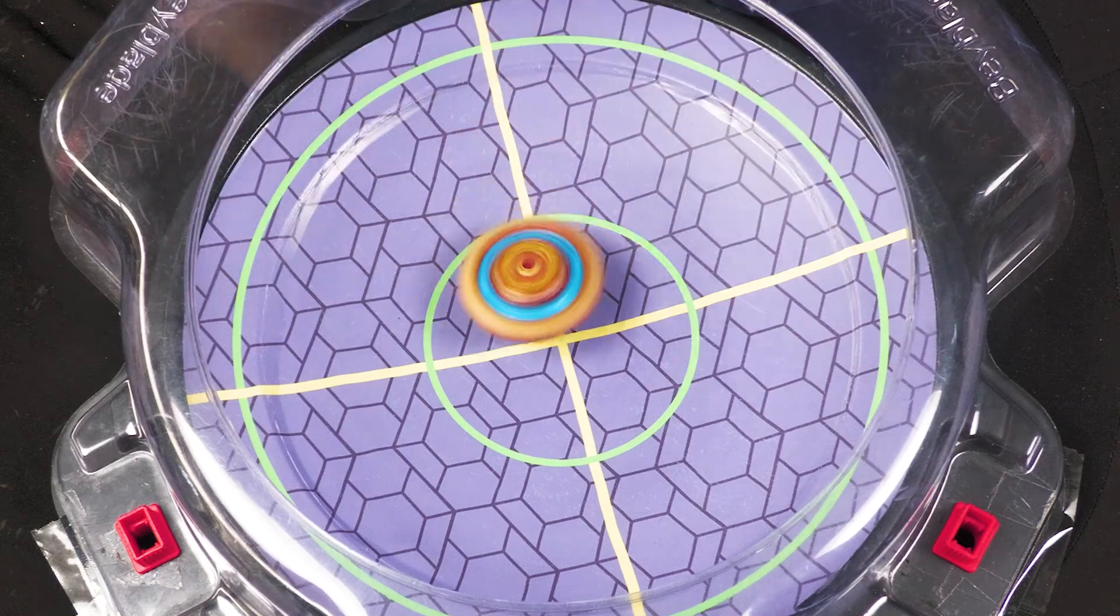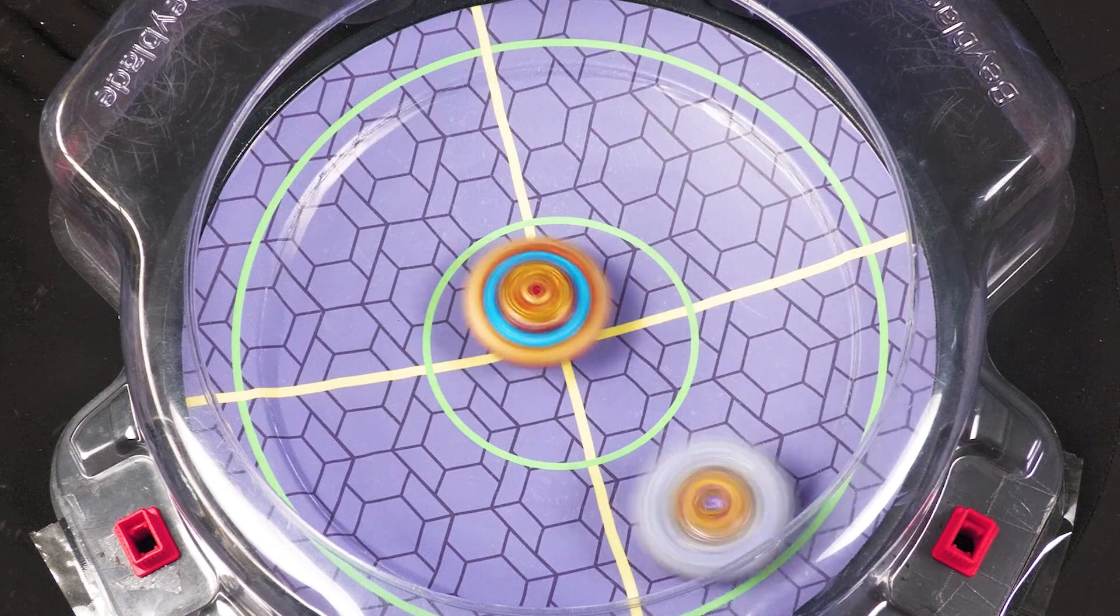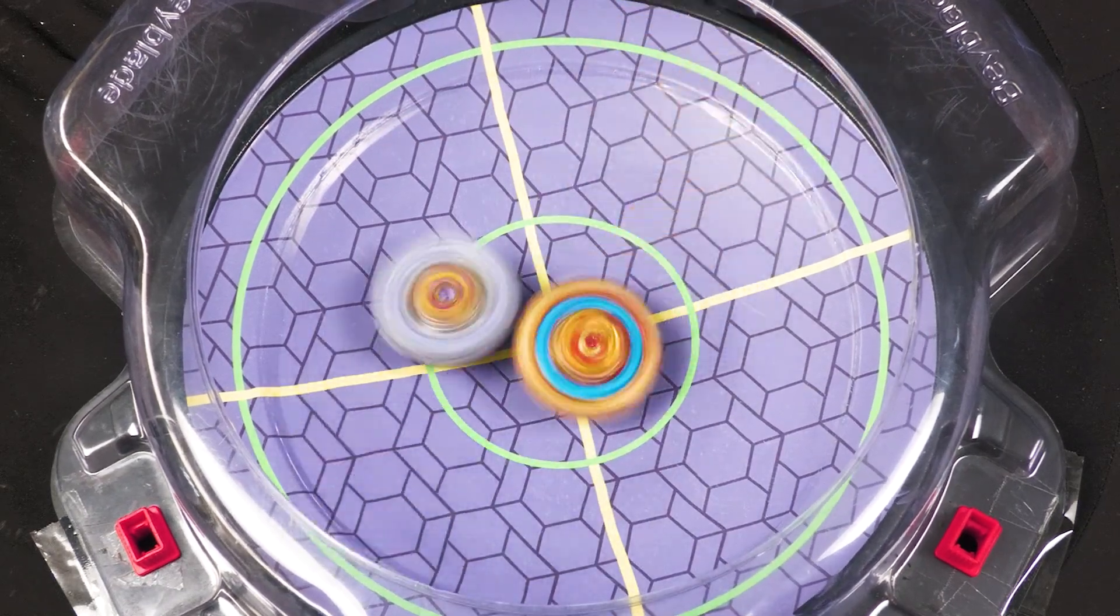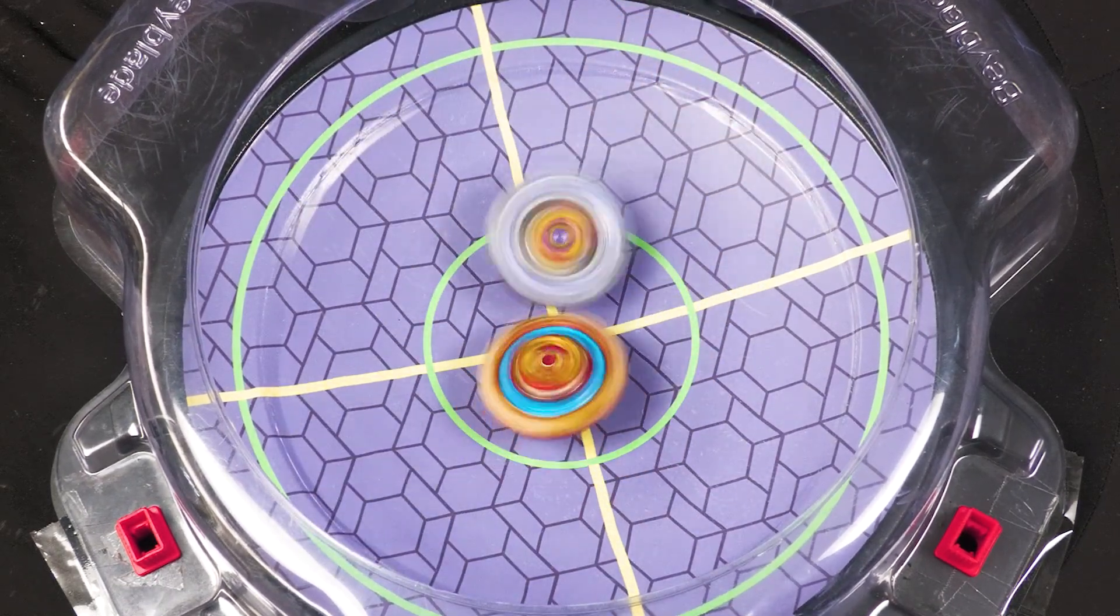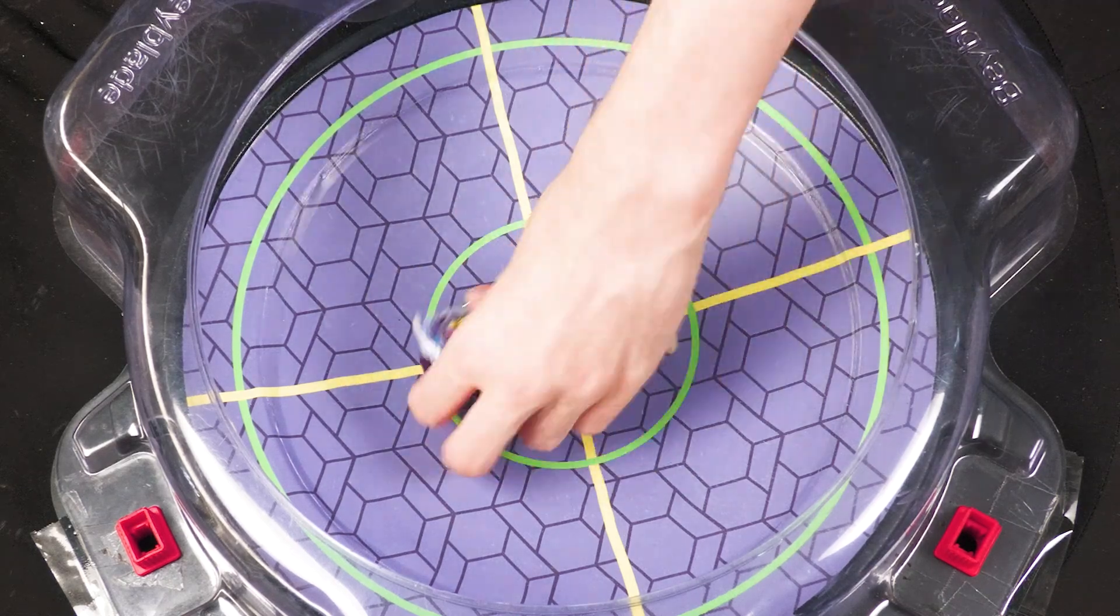Spriggan is one burst away. If it does not burst after all those hits, fair play. Dude that is fair play actually.